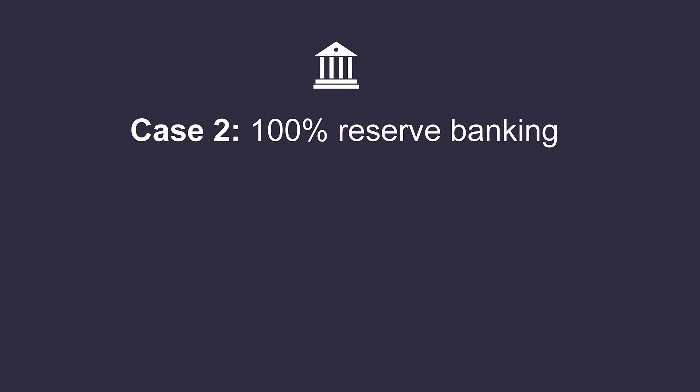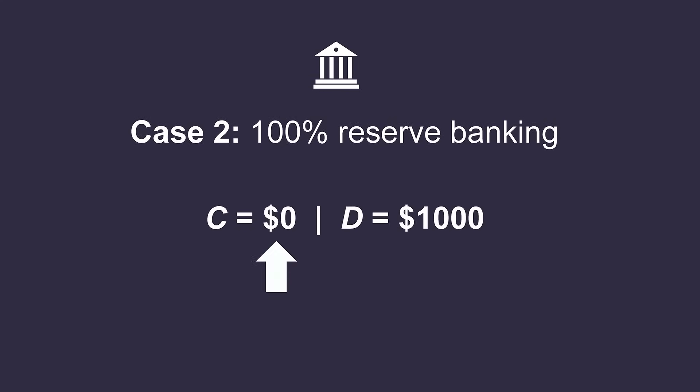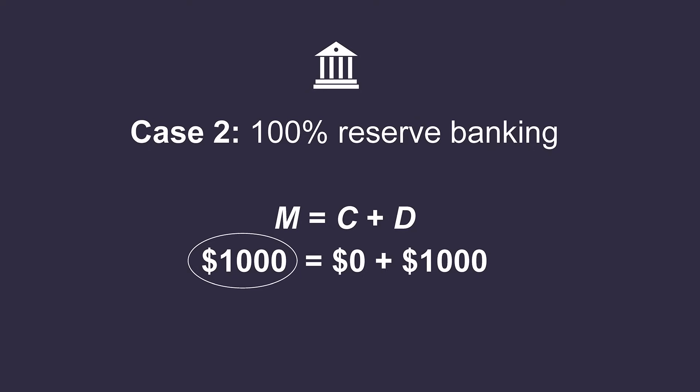In case two, we now have banks. Assume that households deposit all $1,000 into a bank. But these banks are a little unusual — they act more like safe deposit boxes since we assume they're just taking deposits and holding on to all of them without doing any lending. We call this a 100% reserve banking system because banks hold all deposits on reserve in their vaults. Nothing is being held as currency, so C equals zero, while deposits equal $1,000. So the total money supply is still equal to $1,000, exactly the same as the initial amount the central bank printed. With or without banks, the total money supply equals what the central bank printed initially.